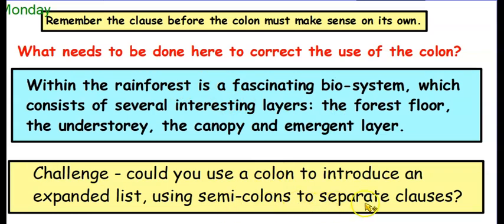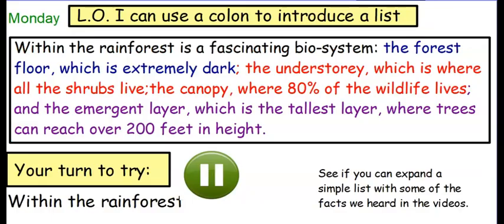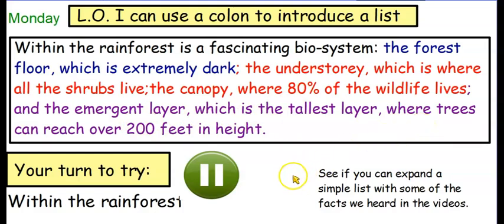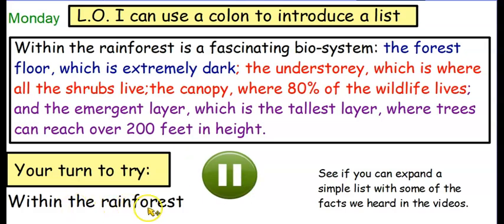So that is now an independent clause — you could try and use a colon today to use an expanded list. Or you might want to use semicolons to separate clauses within a list. So instead of writing a simple list, you could introduce an expanded list. Here's an example: within the rainforest is a fascinating biosystem — the forest floor, which is extremely dark; the understory, which is where all the shrubs live; the canopy, where 80% of the wildlife lives; and the emergent layer, which is the tallest layer where the trees reach over 200 feet in height. You might want to pause the video and have a go of your own — within the rainforest, what are you going to say? — and then you can include that in your introduction today.